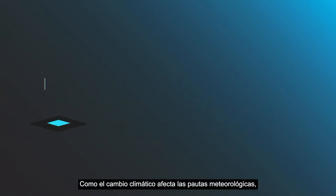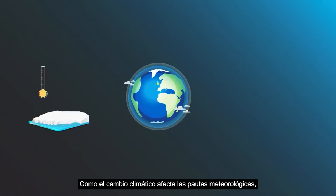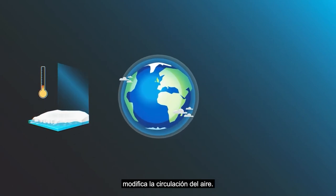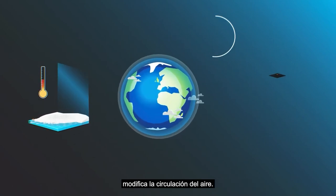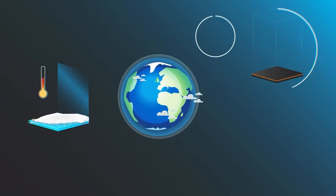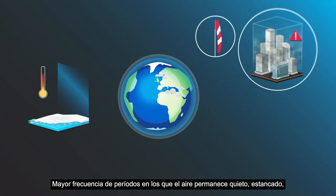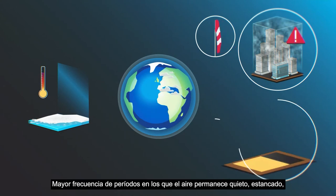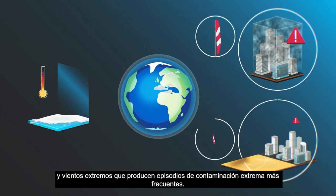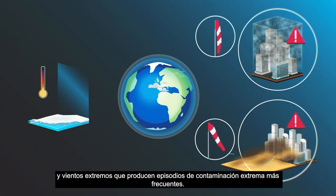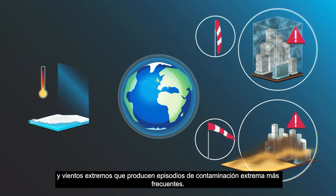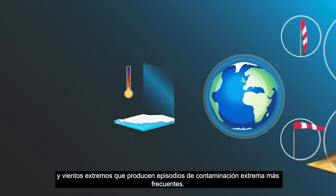As climate change impacts weather patterns, it leads to changes in air circulation. More frequent periods where the air remains still, stagnated, and extreme winds lead to more frequent extreme pollution events.